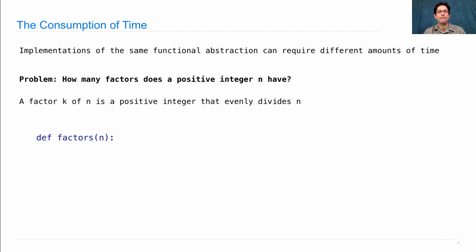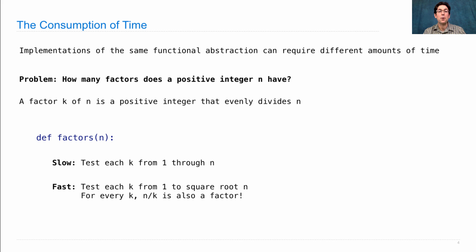Let's say we want to define factors. I can think of two strategies. One is to try every k from 1 through n and see which ones evenly divide n. But there's a more clever way: we'll just try each k from 1 to the square root of n. For every k that evenly divides n, n divided by k also evenly divides n. So whenever we find one factor, we've found two.